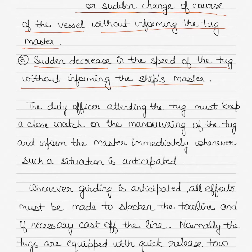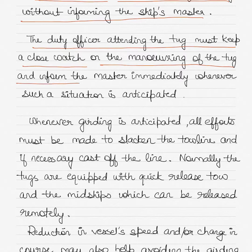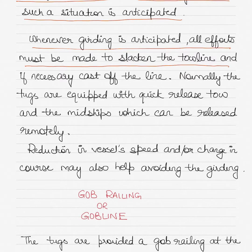If there is any change in the course and speed of the vessel, or change in the course and speed of the tug without either party being informed, such a situation can occur. In such cases, the duty officer attending to the tug must keep a close watch on the maneuvering of the tug and inform the master immediately whenever such a situation is anticipated. Whenever girding is anticipated, all efforts must be made to slacken the tow line and if necessary cast off the line.